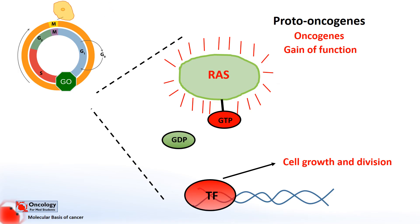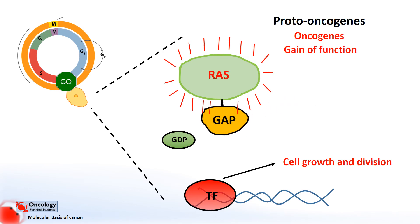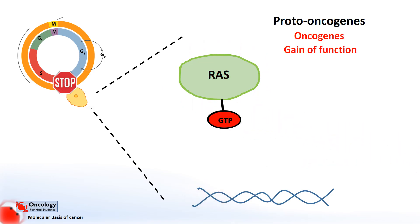The RAS protein then deactivates by the action of something called GTPase activity. This means it breaks down the GTP to GDP. It does this with the help of a protein called a GTPase Accelerating Protein, or GAP. The inactivation is very important — it provides a way of controlling the RAS activity and therefore controlling cell growth and division. If the portion of the RAS protein responsible for the GTPase activity mutates, it may not be able to break down the GTP.